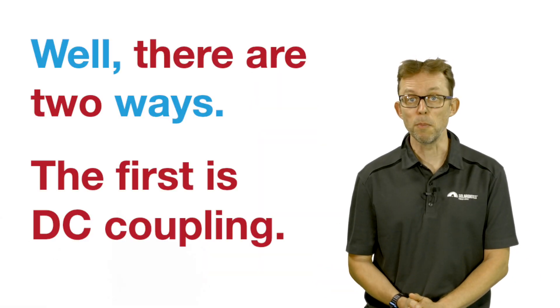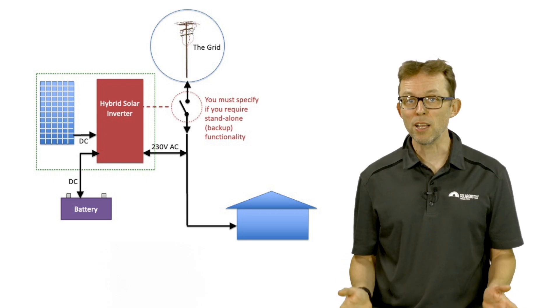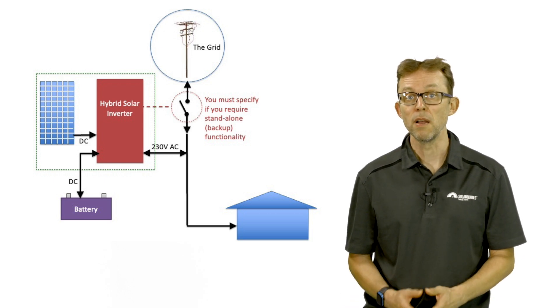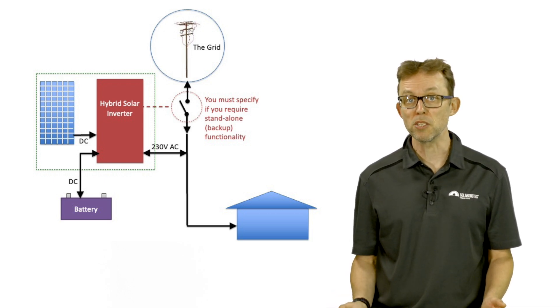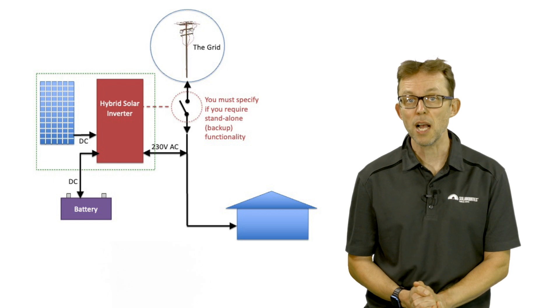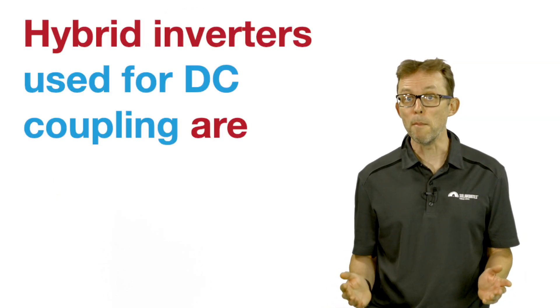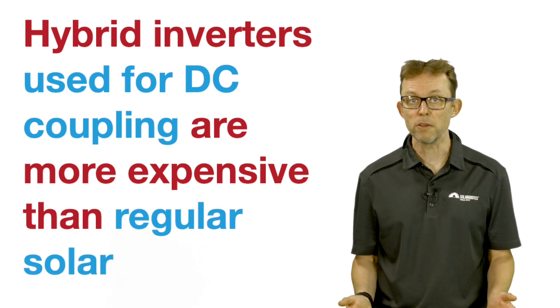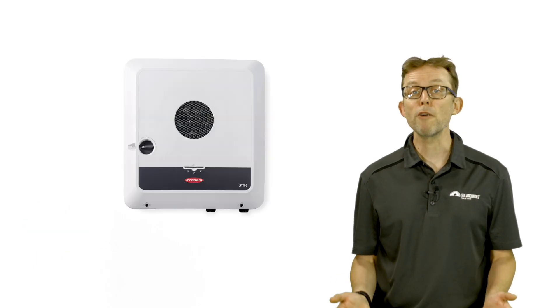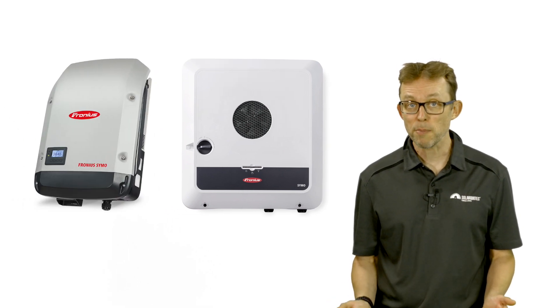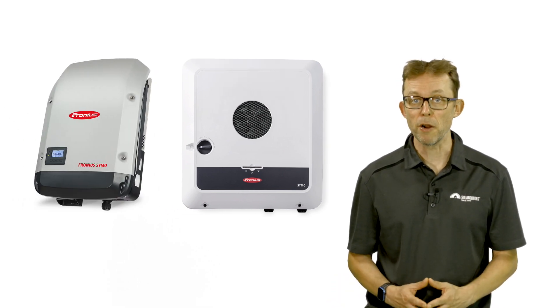The first is DC coupling. You generally use a single hybrid inverter for both the solar panels and the battery, which contains a DC to DC converter. This converts the DC current from the solar into DC that can charge the battery. Hybrid inverters used for DC coupling are more expensive than regular solar inverters. For example, the Fronius Gen24 hybrid inverter is 50% more expensive than a non-hybrid Fronius.